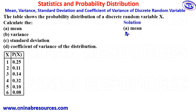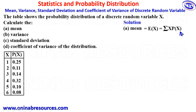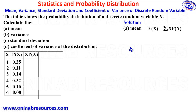In our solution, we are going to start with the mean. The formula for calculating the mean, which is also known as the expected value of the distribution, is given as: expected value equals sigma x·p(x). This means we are going to create an additional column to accommodate x·p(x), and then multiply each random variable by its corresponding probability.